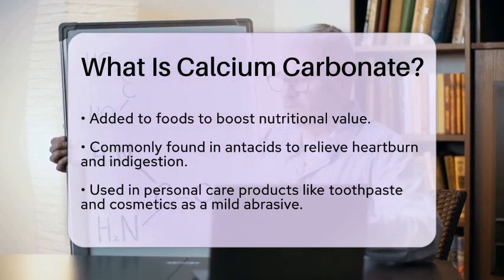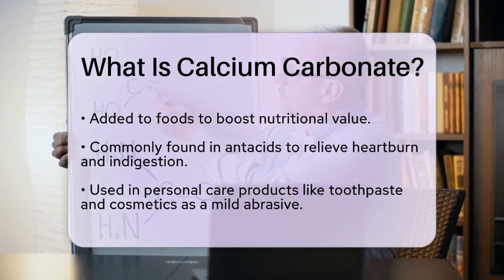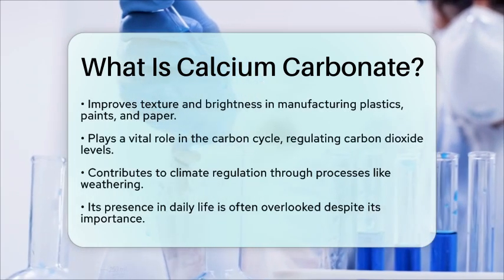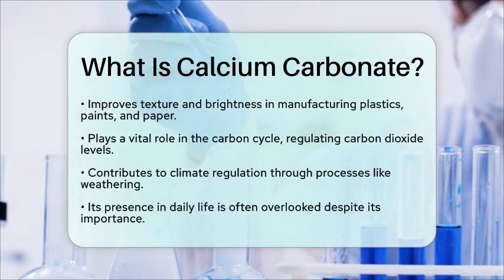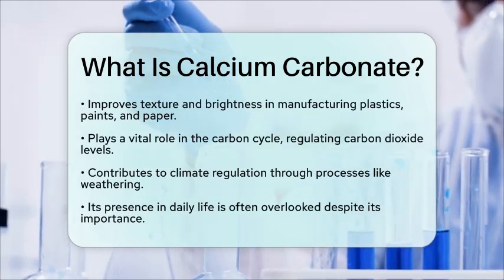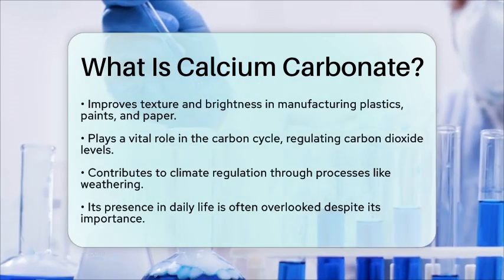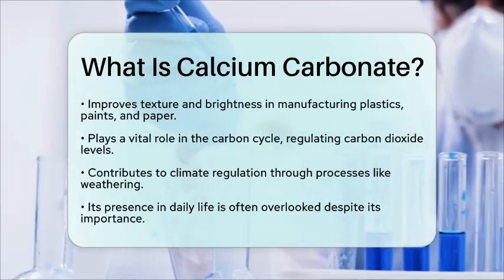This compound is not only important for industrial applications, but also plays a vital role in the environment. It is involved in the carbon cycle, where it helps regulate carbon dioxide levels in the atmosphere. Through processes like weathering, calcium carbonate can sequester carbon, contributing to climate regulation.